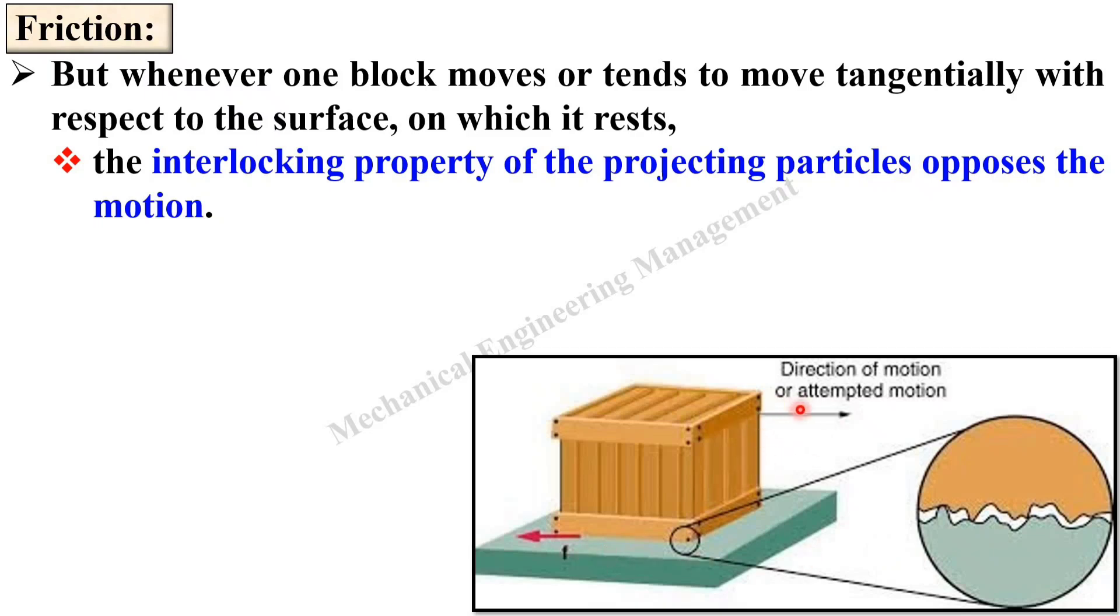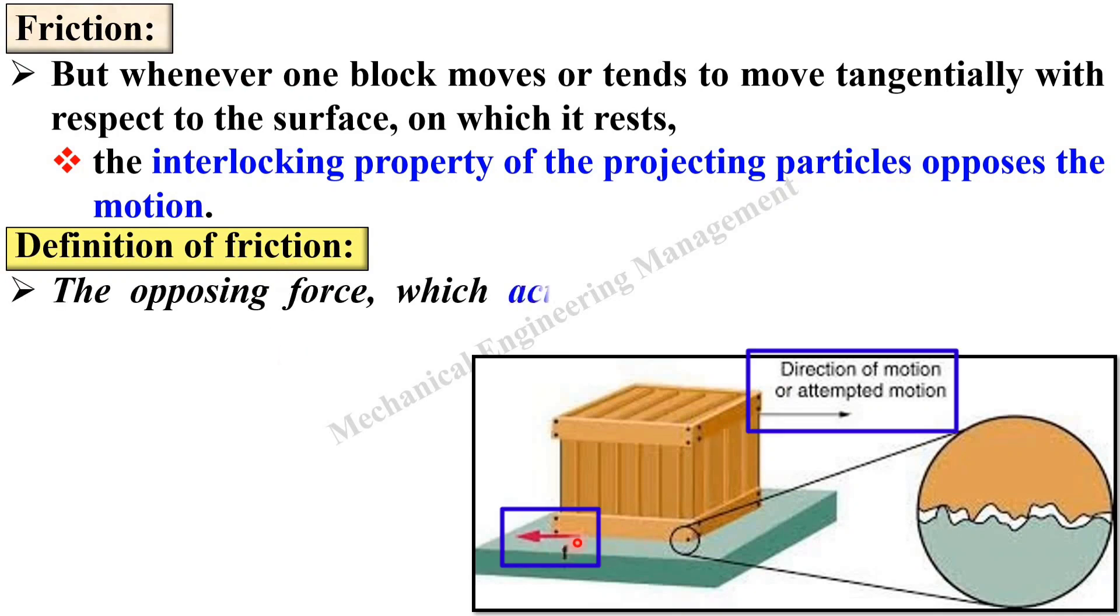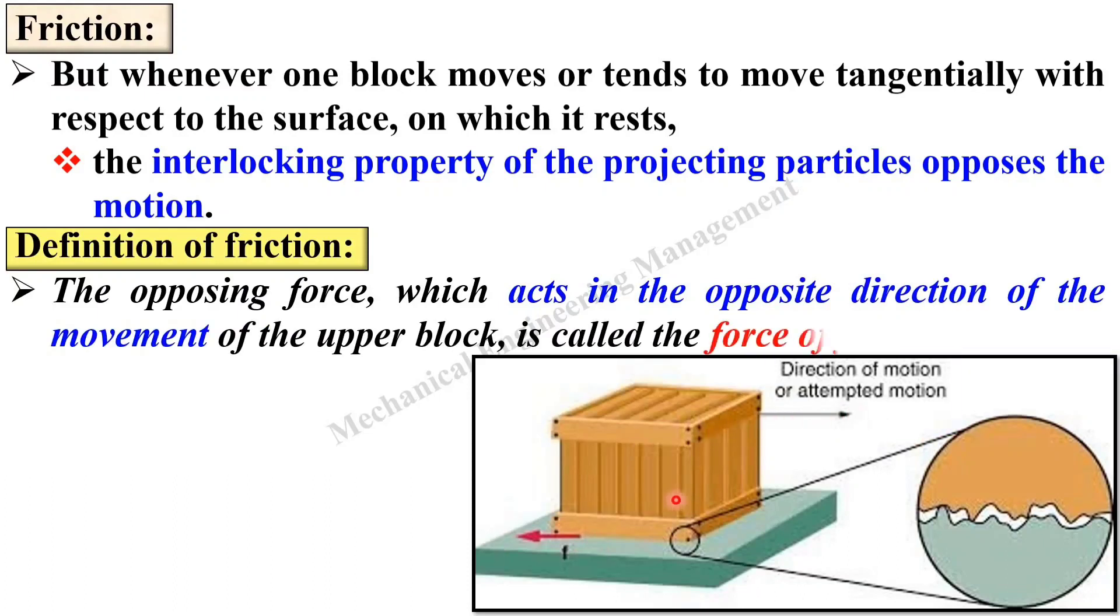Here you can see this is the direction of the motion and this irregularities always opposes and thus it is in the opposite direction to the direction of the motion. Now, I think we are able to define the friction. Definition of friction: The opposing force which acts in the opposite direction of the movement of the upper block is called the force of friction or simply friction. It is very simple. The friction is one type of opposing force which acts opposite to the direction of the motion.